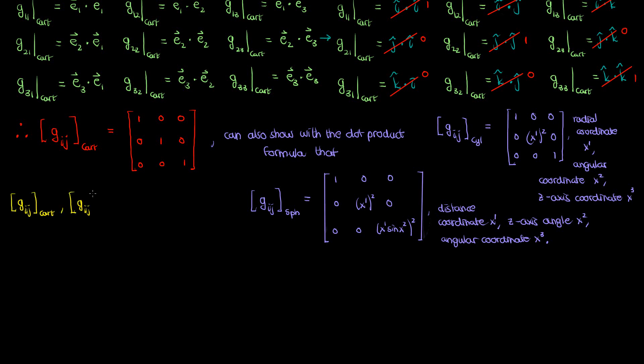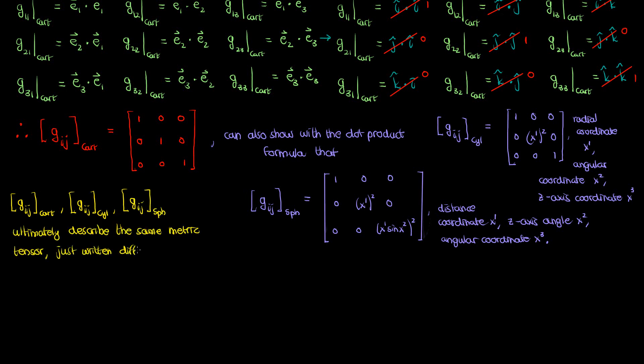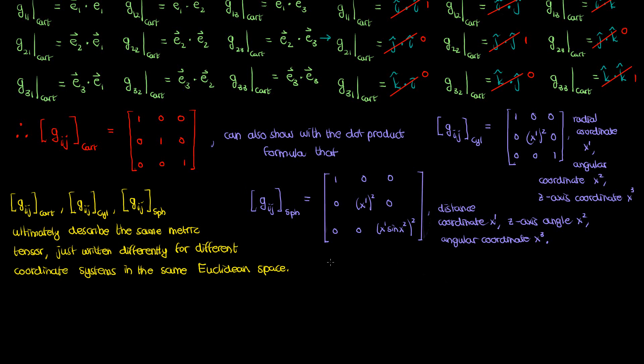Bear in mind that all of these expressions for the metric tensor in different coordinate systems ultimately describe the same tensor, because we're still in Euclidean space. It's just that when we transform the coordinate system, the components of the metric tensor and the basis vectors transform. However, the metric tensor itself does not change in the same Euclidean space — it's a tensor after all, so it should not change just with a change of coordinates.